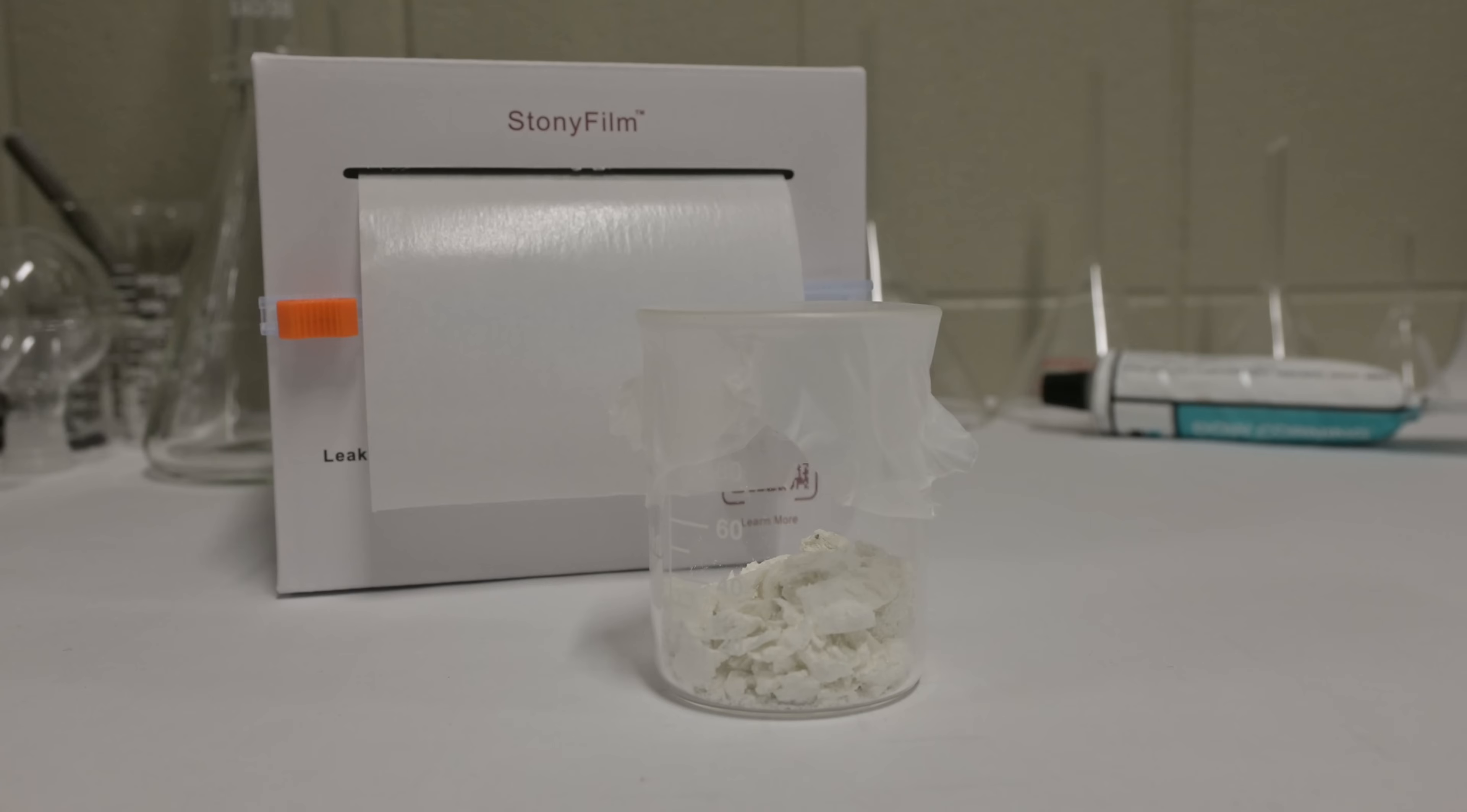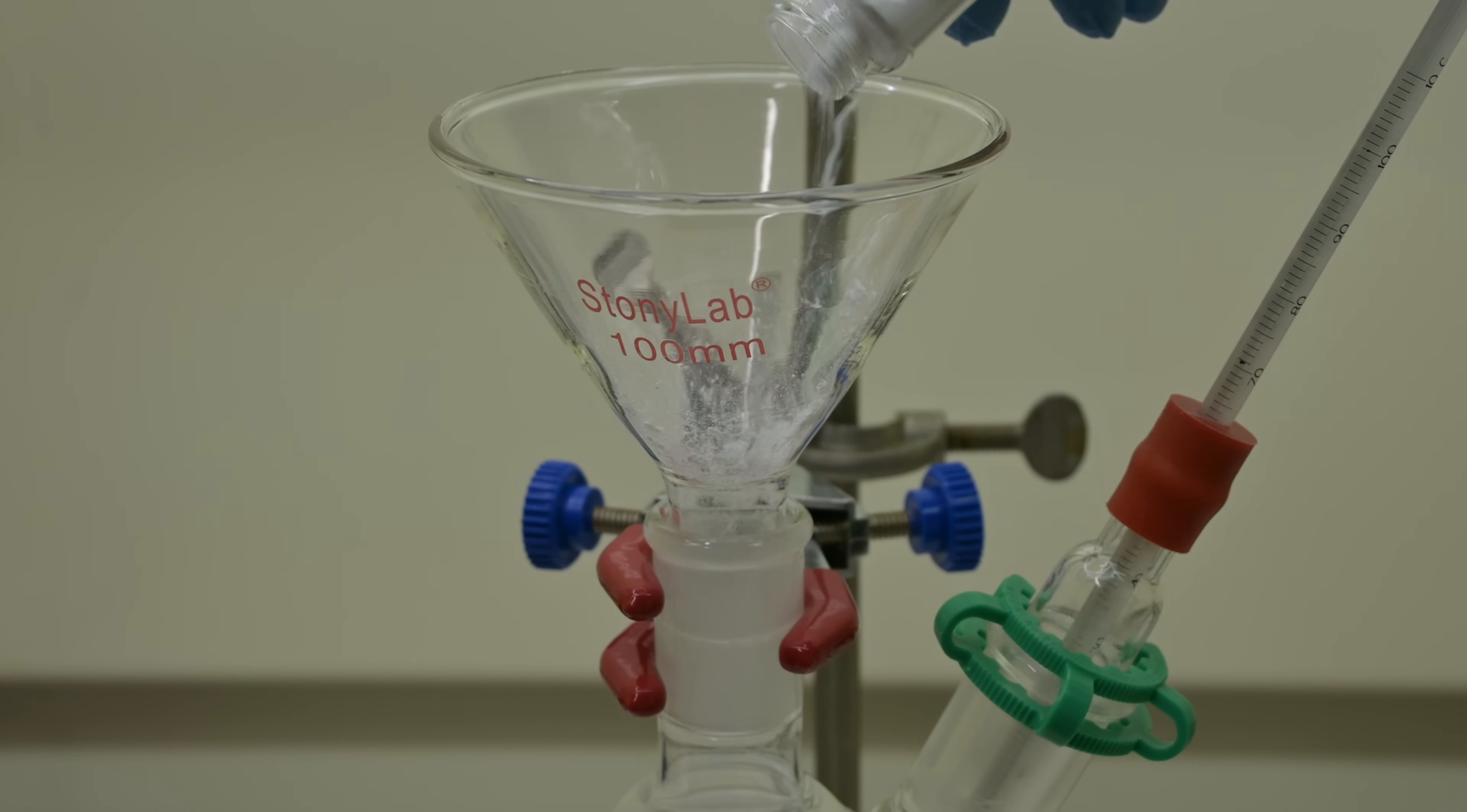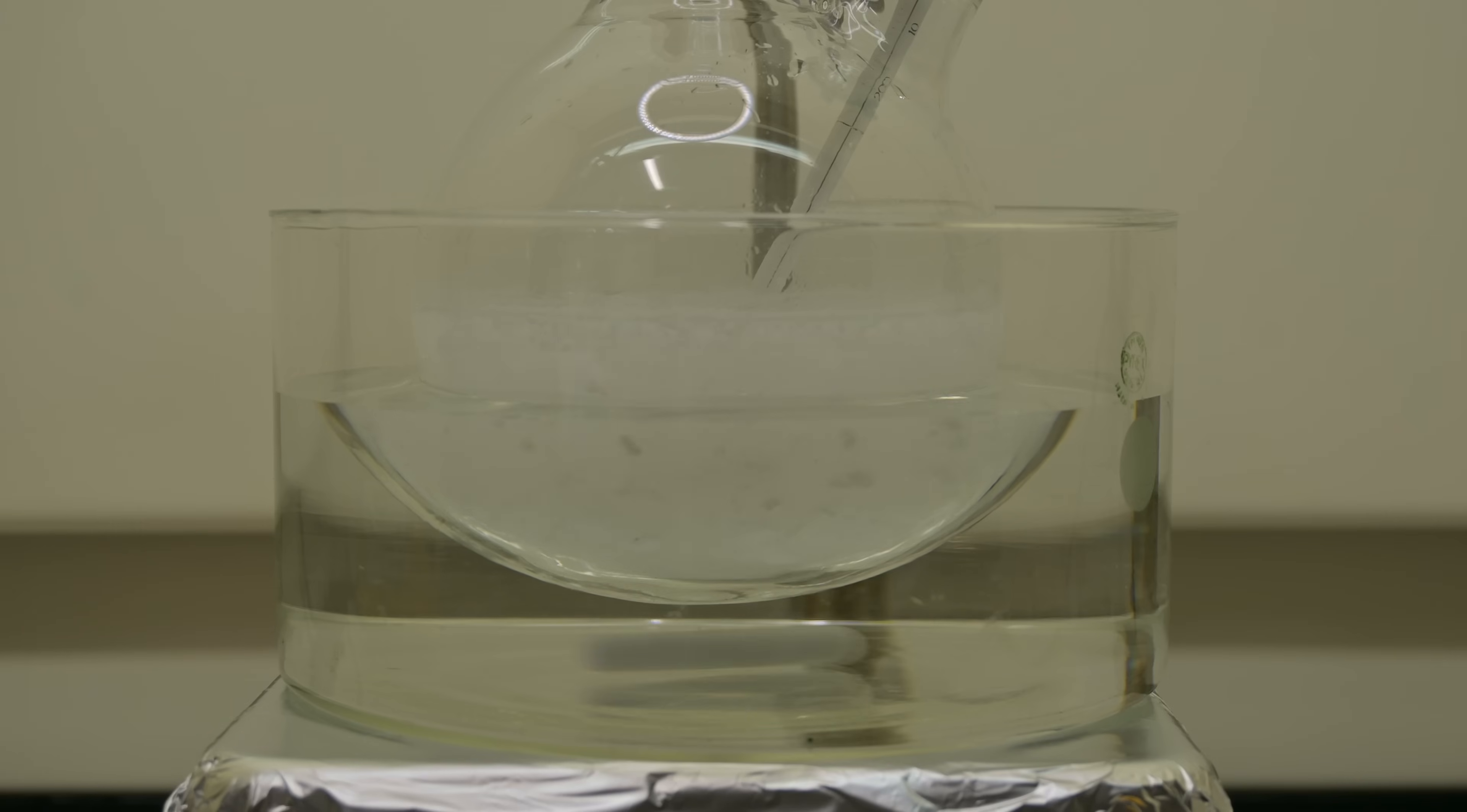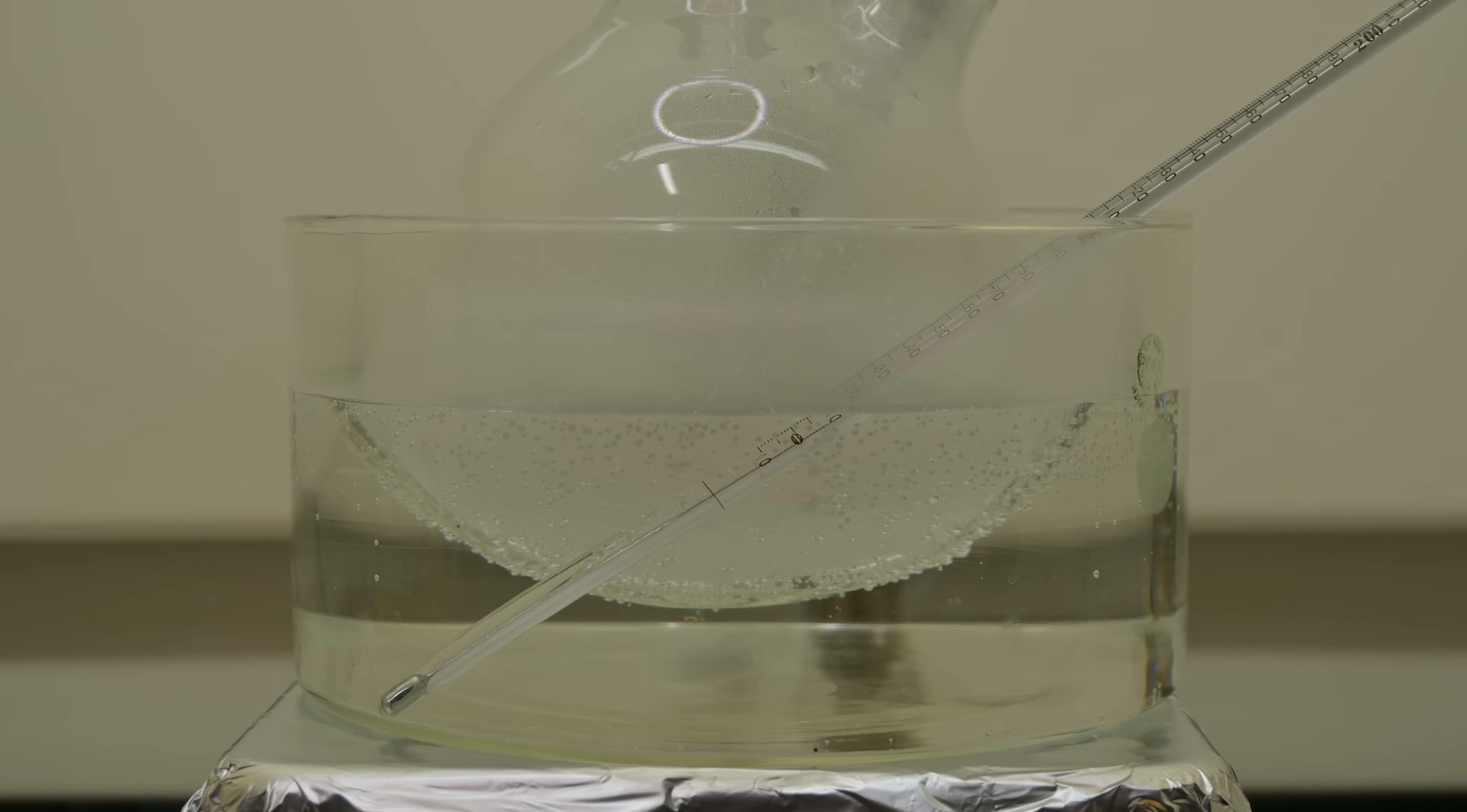Now we're going to take this product and transform it into p-acetaminobenzoic acid. I begin by adding 6.1 grams of our previous product into a 1L round bottom flask, followed by 16.3 grams of hydrated magnesium sulfate and 400 milliliters of distilled water. I set the flask onto a steam bath and bring the mixture up to about 85 degrees Celsius. It's important to use gentle, even heating and not to let it boil too hard, just enough to keep things hot and fluid.